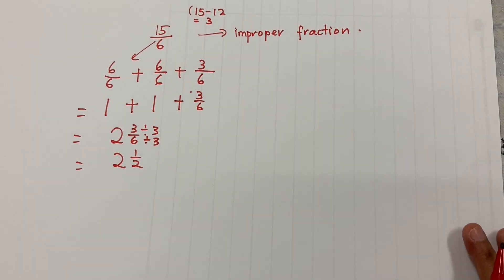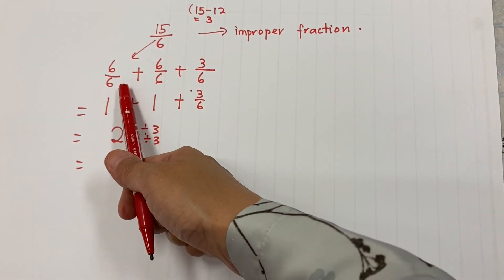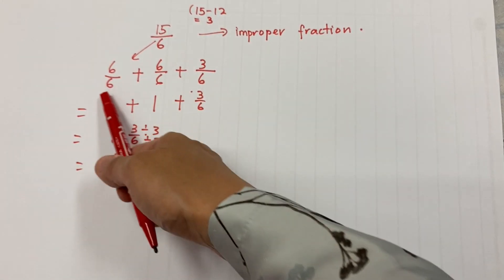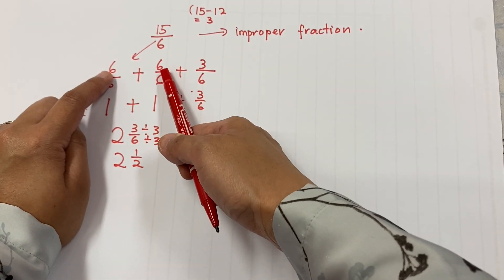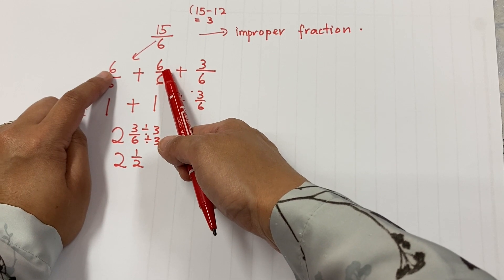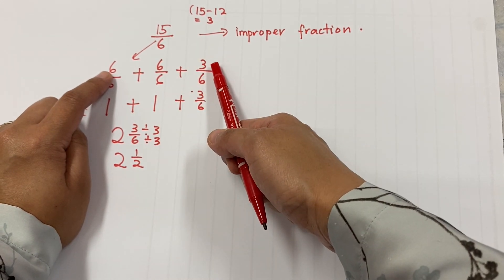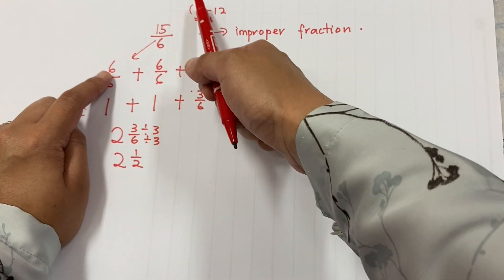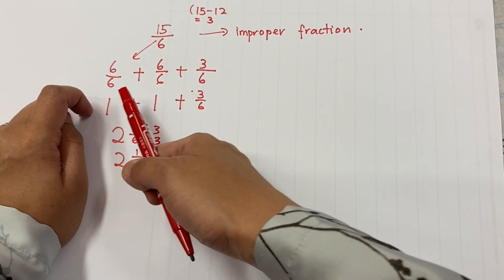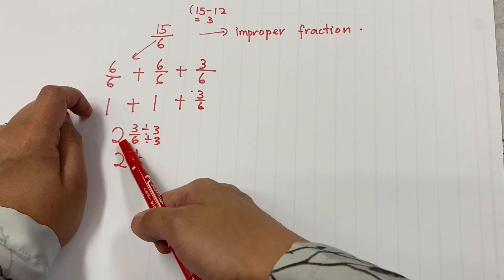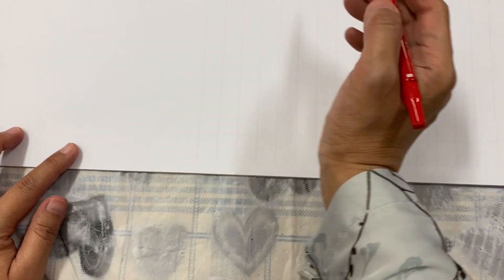This is when you're not given any drawings. You can draw your model or simply break it down into one whole — that is 6. Since 6 is still smaller than 15, you can add another 6. So 6 plus 6 gives you 12. You cannot add another 6 because 6 plus 6 plus 6 gives you 18, so you stop at 12. Then 15 take away 12 gives you 3 — the extra is 3 out of 6. So one whole plus one whole plus 3 out of 6 is 2 whole and 3 out of 6.